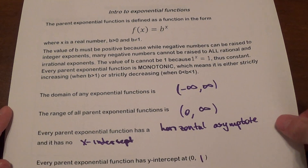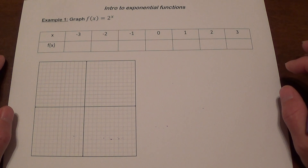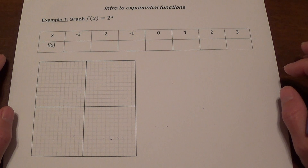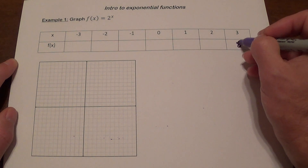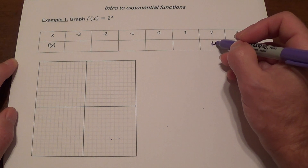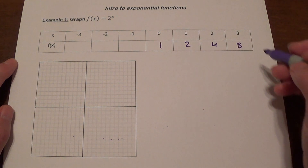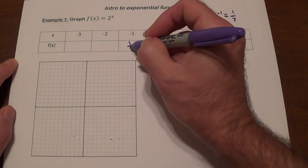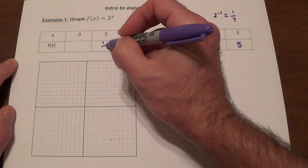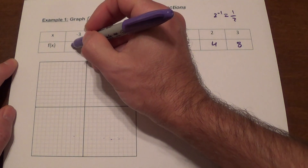Let's take a look at some problems. We're going to graph 2 to the power x. Starting with positive numbers: 2 to the 3rd power gives us 8, 2 to the 2nd power gives us 4, 2 to the 1st power gives us 2, 2 to the power of 0 is 1, 2 to the power of negative 1 is 1/2, 2 to the power of negative 2 is 1/4, and 2 to the power of negative 3 is 1/8.